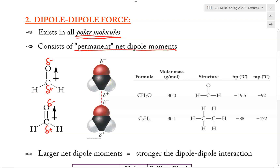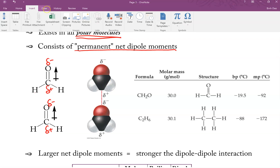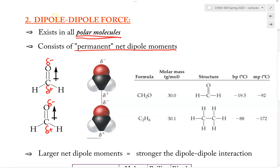Here is what happens: anytime we have two dipole moments, the two dipole moments may interact with each other, in which the partial positive end of one dipole moment may interact with the partial negative end of another dipole moment. And this is exactly what the dipole-dipole force is — two dipole moments interacting with each other.